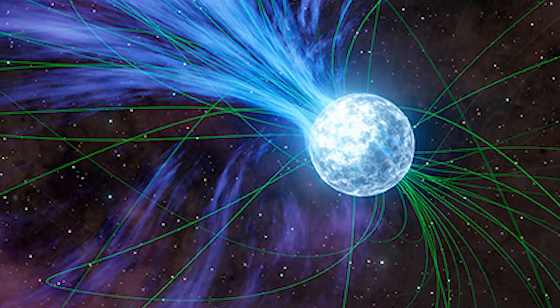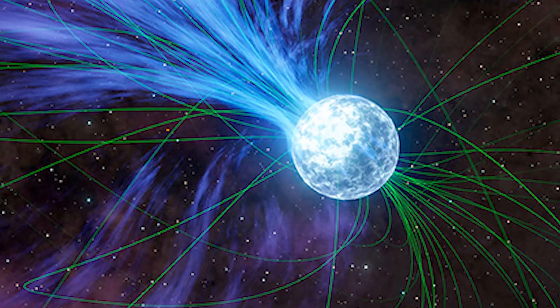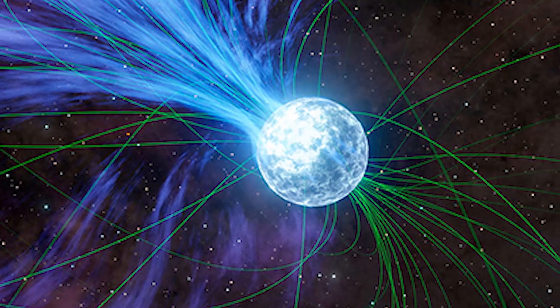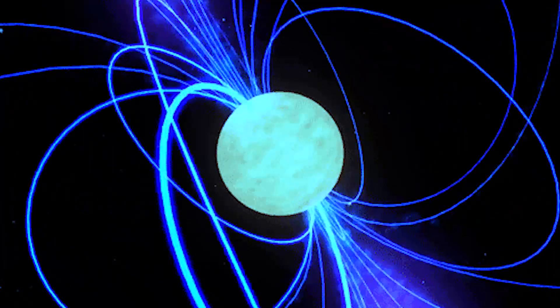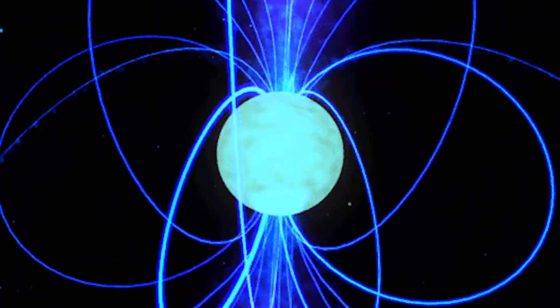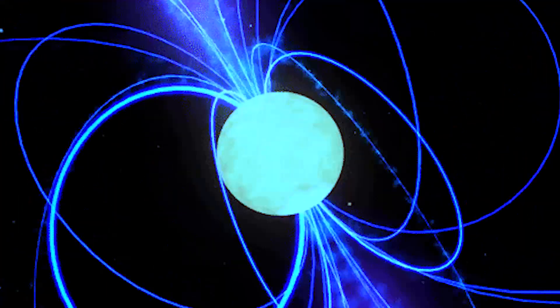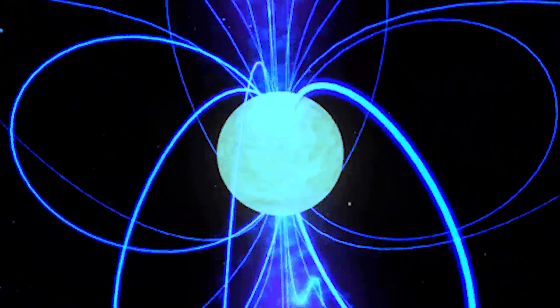Let's start with the conditions needed to produce axions. First is the strong magnetic field. In certain neutron stars, we definitely have that, that's why we chose them in the first place. Second is a prodigious source of photons to convert into axions. Actually, the requirement is a bit more stringent than that.